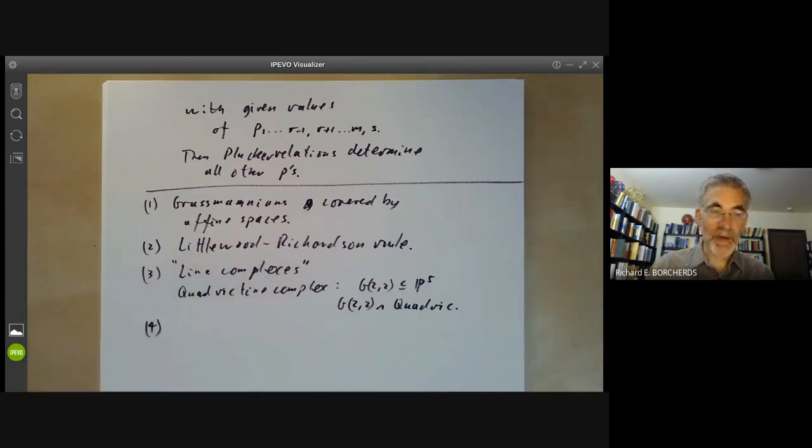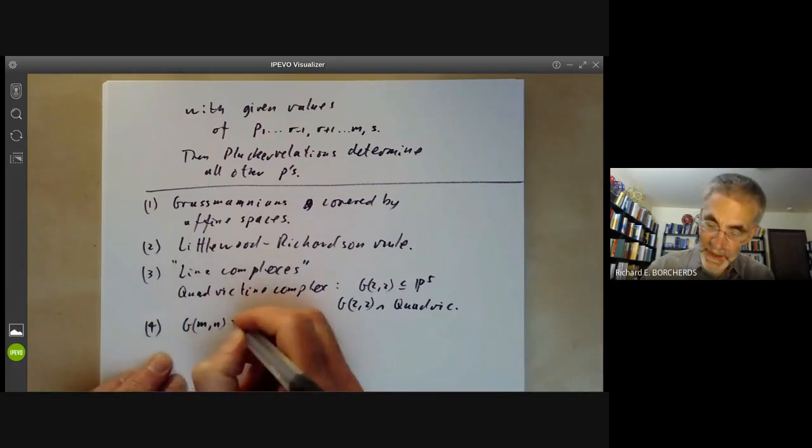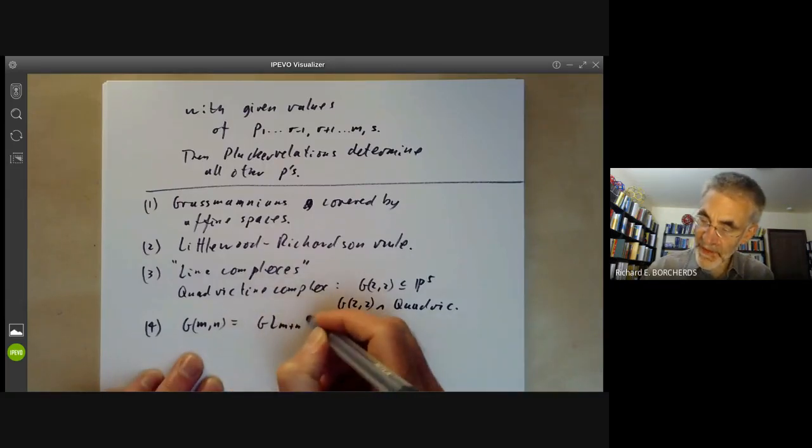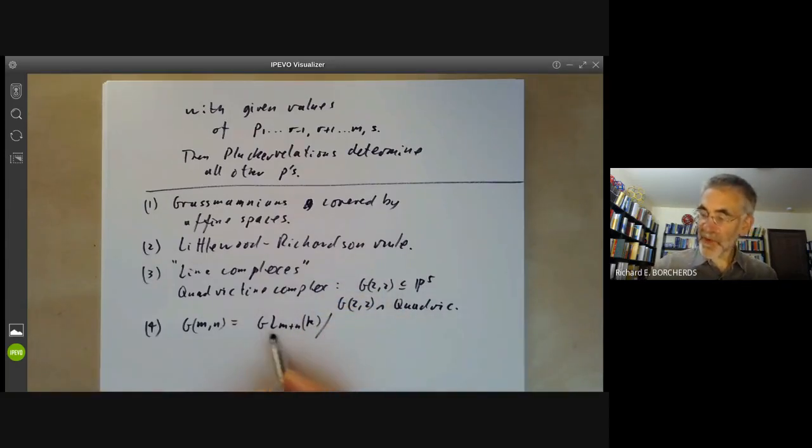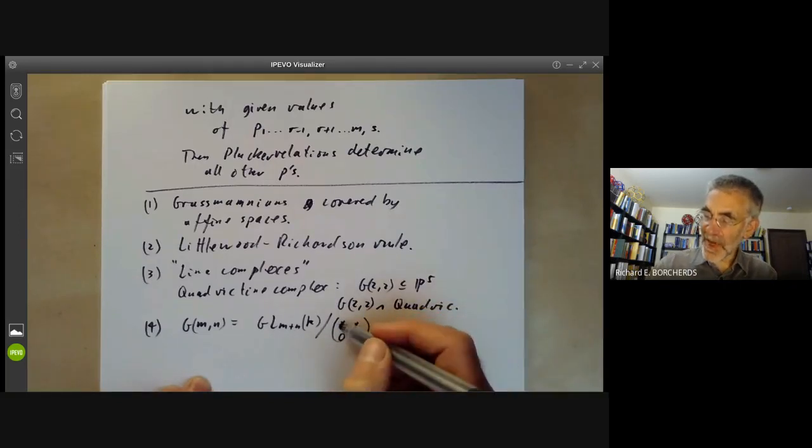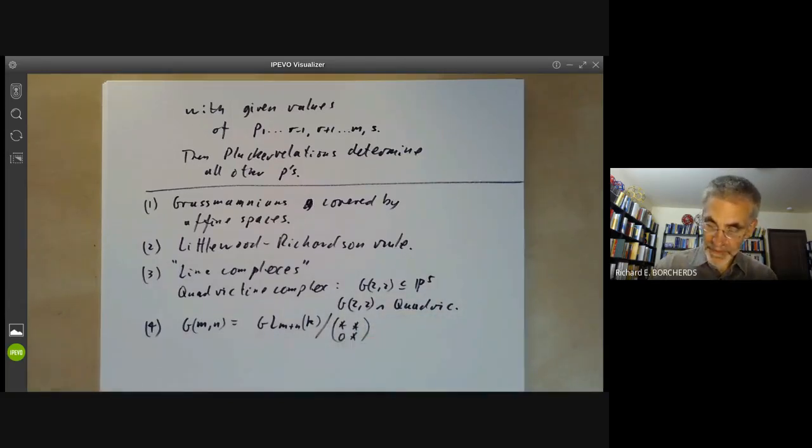The fourth place Grassmannians turn up is as quotients. So the Grassmannian GMN is a quotient of the group GL_{M+N} over K. The group GL_{M+N} of K acts transitively on the M-dimensional subspaces. And the subgroup fixing one M-dimensional subspace is a sort of block form looking like this, where these blocks are M by M, and this is M by N, and this is N by M.